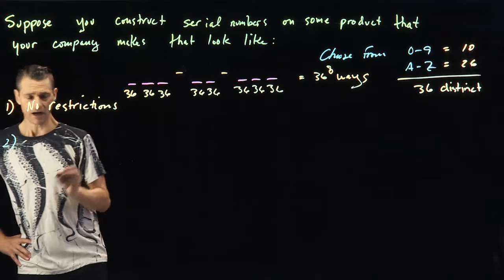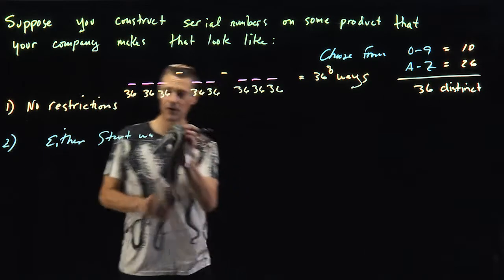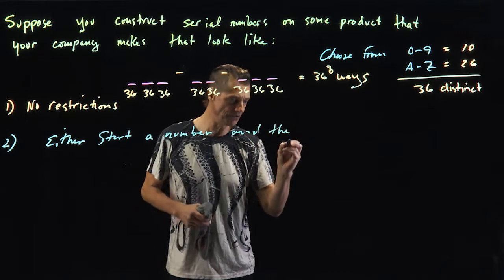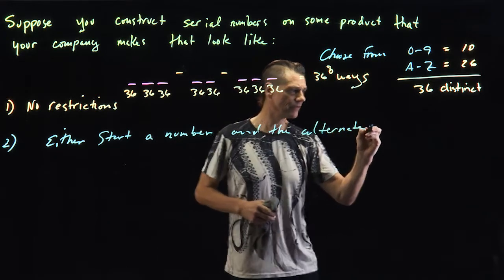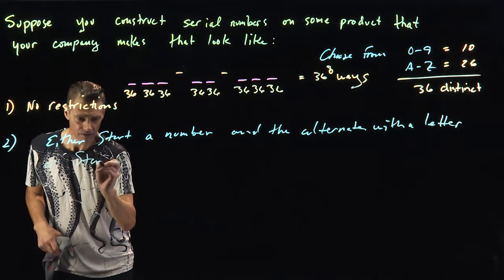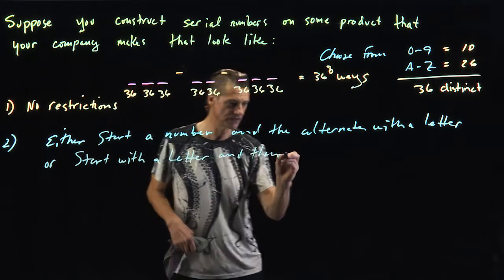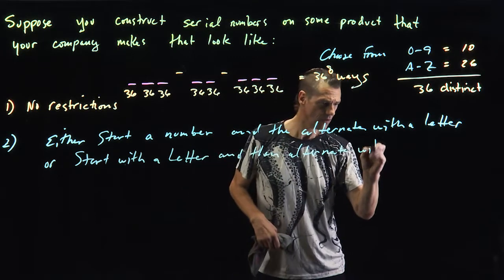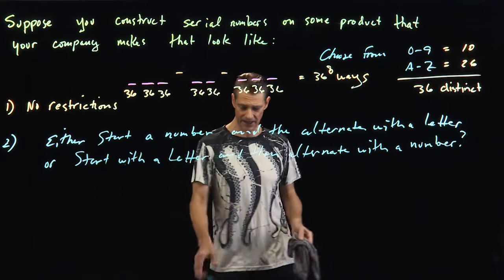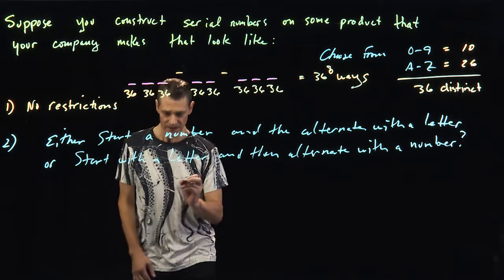What about if you either start with a number and then alternate with a letter, or start with a letter and then alternate with a number? Okay, so we have a couple different cases here. And once again, anytime you can draw some kind of picture, this would be a really hard problem if you don't get a visual on this.